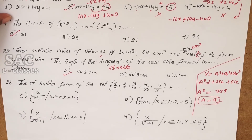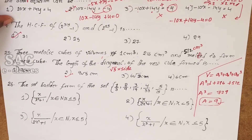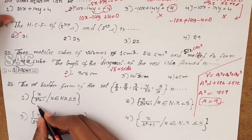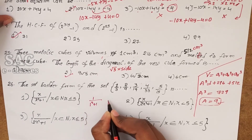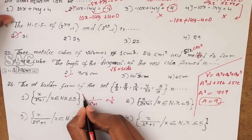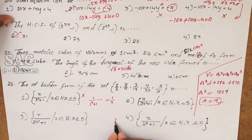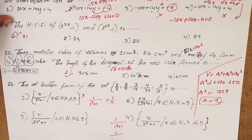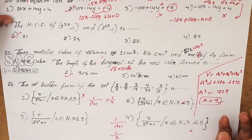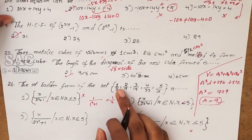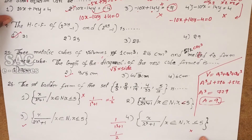Problem 26: find the set builder form of the set {1/3, ...}. Checking options: x/(x²+1) gives 1/2 for x=1, not 1/3. Testing option with natural numbers less than 5 — that gives {1, 2, 3, 4} which is 4 terms, but we have more terms, so option 3 is correct by logic.